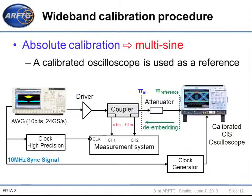The second step is absolute calibration using the multi-sine signal. Here is the measurement setup for this calibration step. We use the same multi-sine signal as in relative calibration. This signal is now measured using a calibrated oscilloscope. After that, the acquired signal is processed to embed the effect of the attenuator used between the input and reference planes.